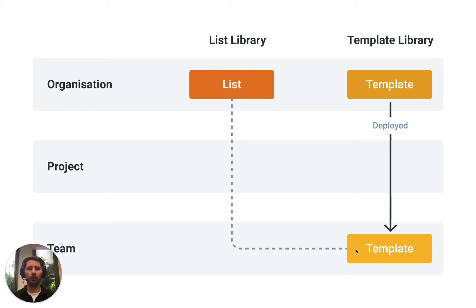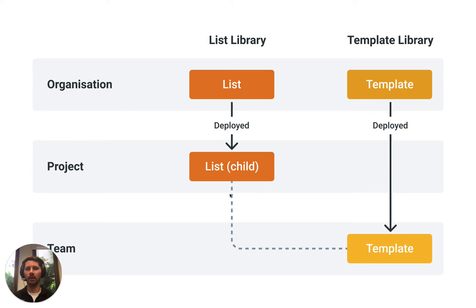But let's say on this project only 20 of those people are actually relevant. What we can do is take this list and deploy it out to our project as what's called a child list, and then build that child list to only include, say, 20 people that exist in the parent list. So the parent list has a hundred items, the child list might only have 20, and when we're filling out our site diary there will only be 20 people to choose from in the drop-down menu.